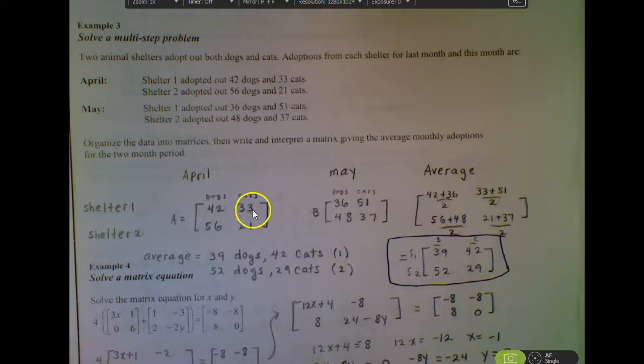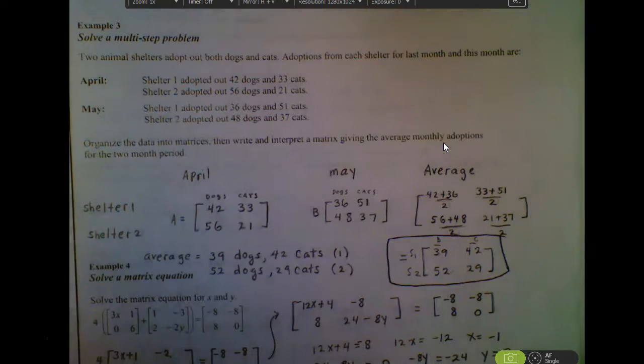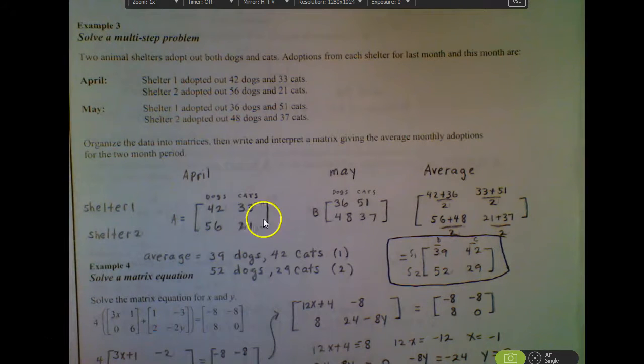Always important to title what's going on here. We have our first column was dogs and our second column was cats. Whatever we did for the first matrix, we had to do the same thing for the second matrix. As I go to add these two together, because we're just finding an average, which means I want to add them together and then divide by two. So as I add this matrix to this matrix and then divide everything by two, here's what that would look like. We're just finding the average. As you simplify all that, here's what we got as the result.